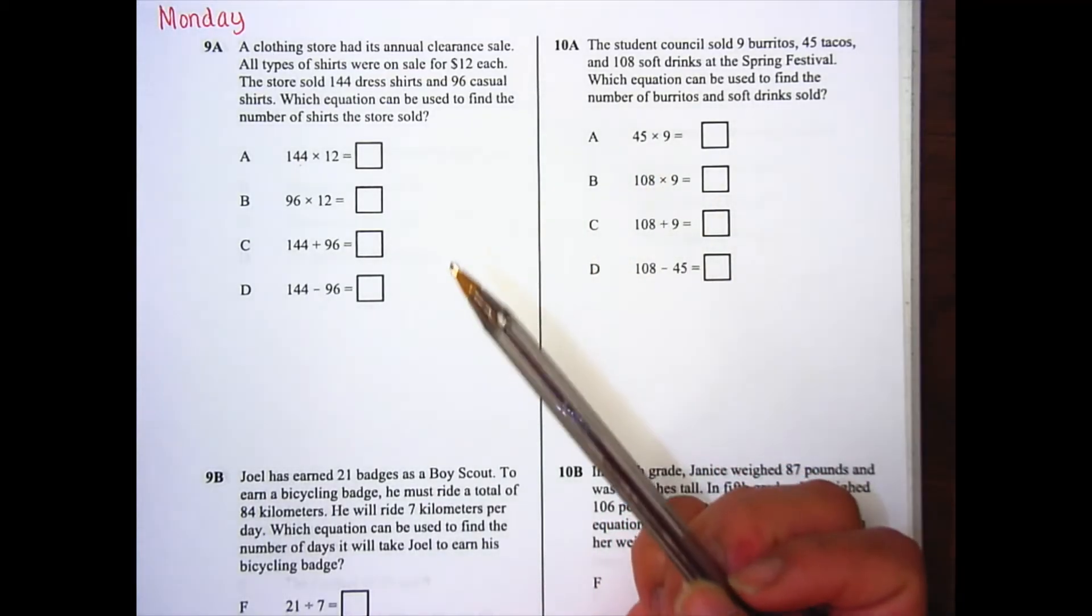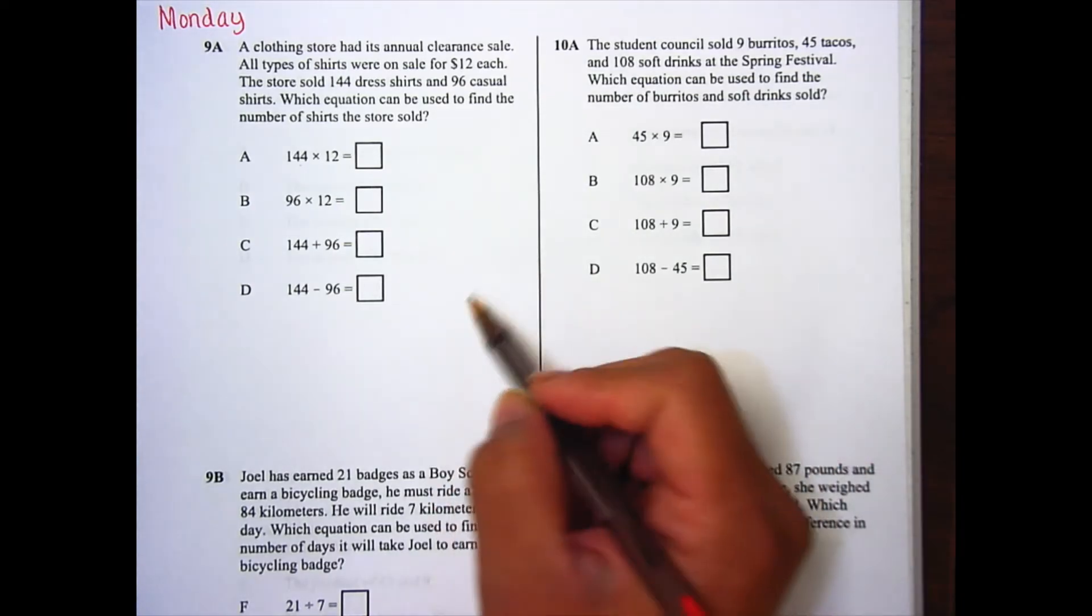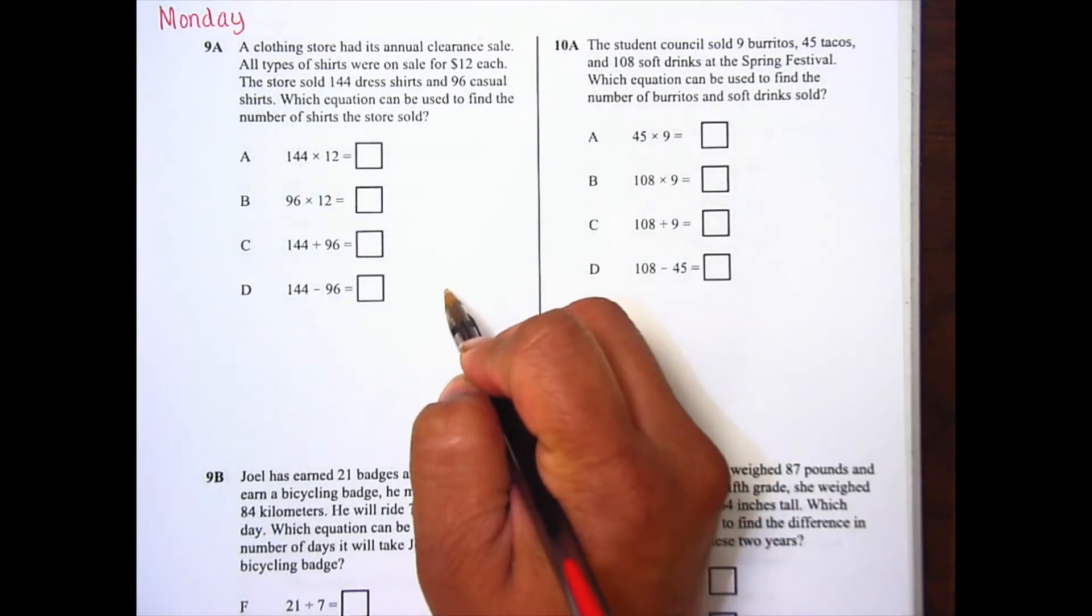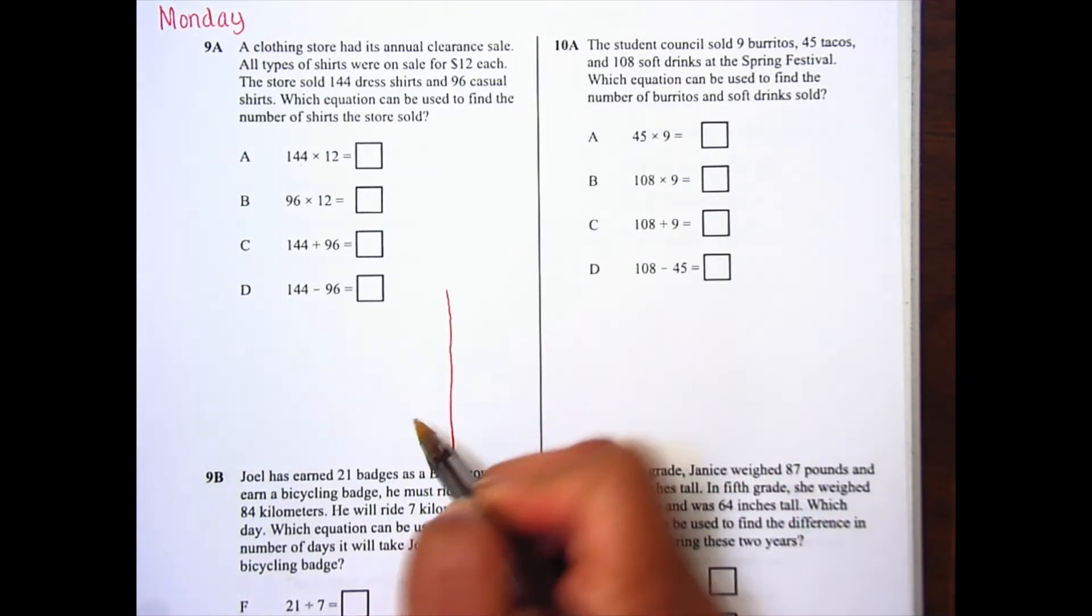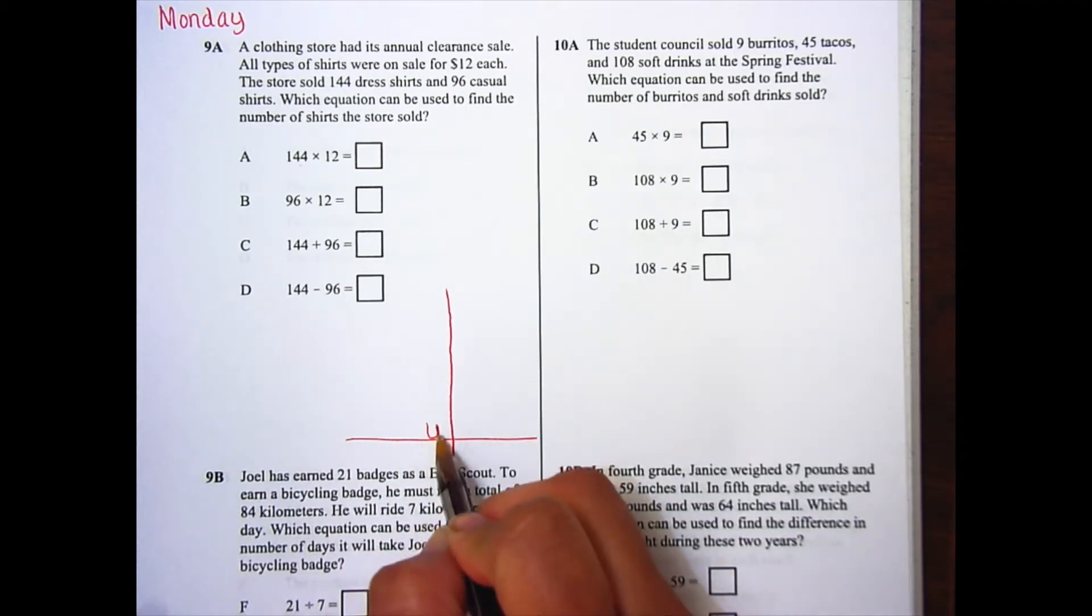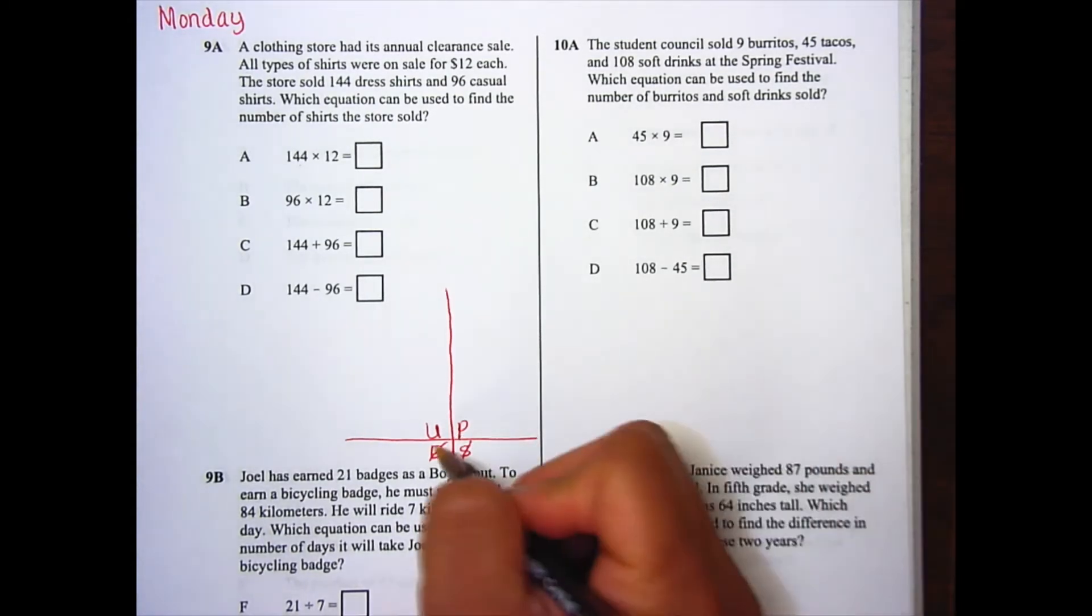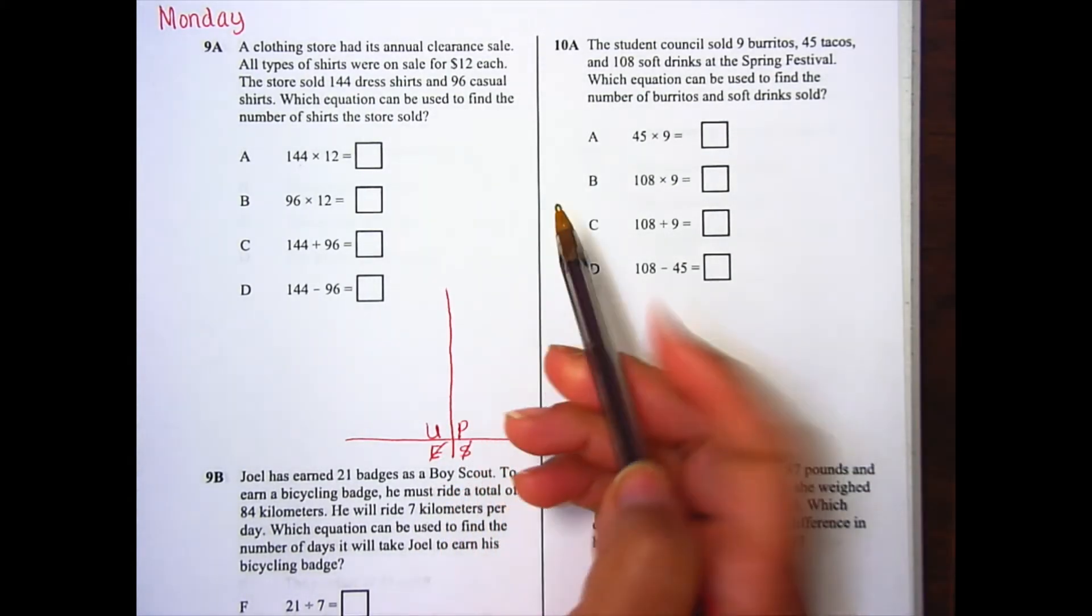So we are going to continue working with our understand and plan of our UPSI model. And if you all remember, our UPSI model has four parts. But again, we're only looking at our understand and our plan. We are not doing solving or evaluating right now.